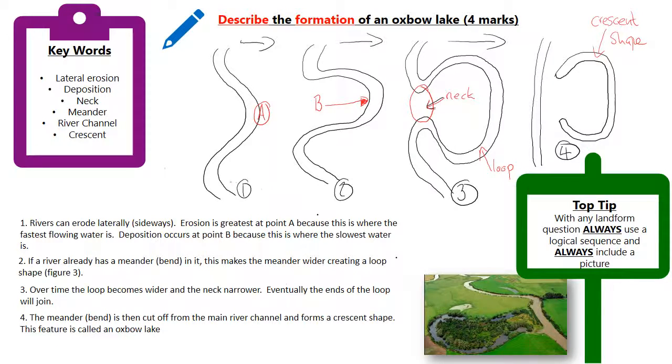The meander or the bend is then cut off from the main river channel, as you can see in picture four over on the right, and it creates a crescent shape. So I've used all of the keywords there and I've said how an oxbow lake is formed.